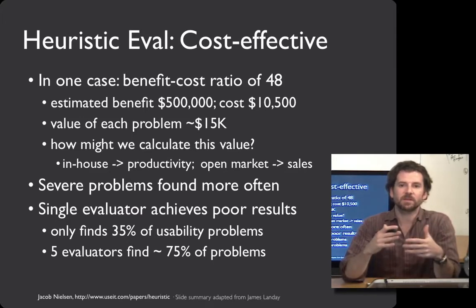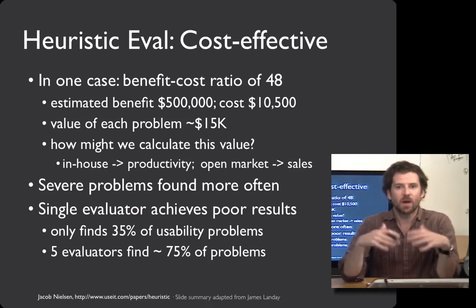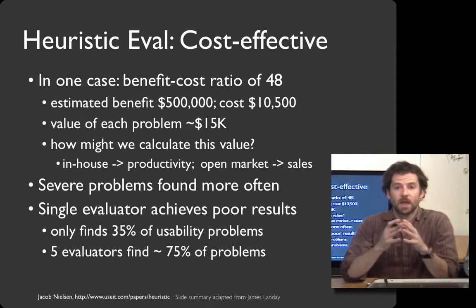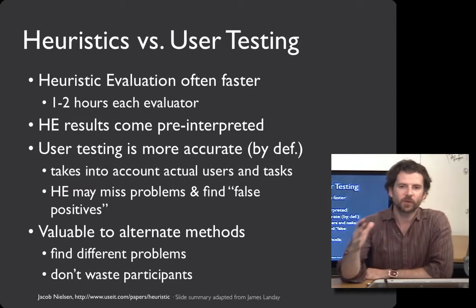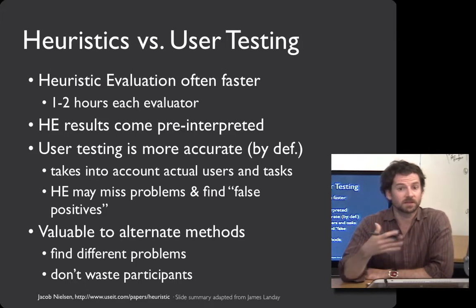One thing we can get from that graph is that evaluators are more likely to find severe problems, and that's good news. With a relatively small number of people, you're pretty likely to stumble across the most important stuff. However, even the best single evaluator found only about a third of the problems in the system, which is why using five evaluators is going to get you most of the benefit you'll be able to achieve. Comparing heuristic evaluation and user testing, heuristic evaluation can often be a lot faster — it takes just an hour or two for an evaluator, and the mechanics of getting a user test up and running can take longer, not even accounting for the fact that you may have to build software.